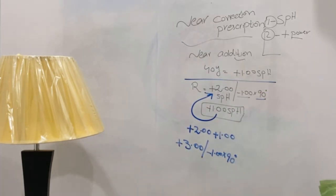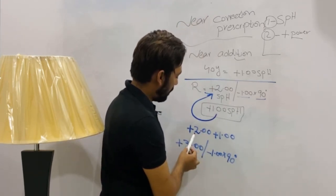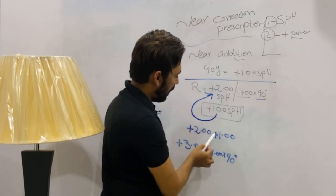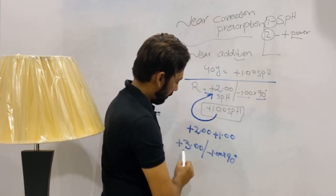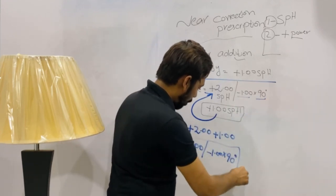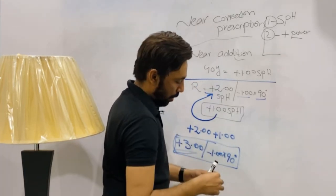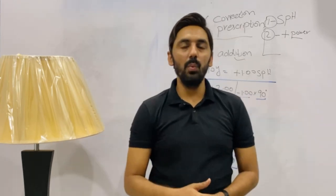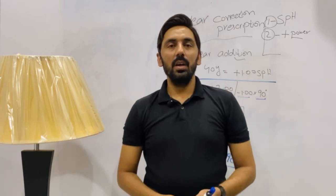So the new spherical in the near prescription is +3.00, because we had +2.00 spherical in the distance correction and we added the +1.00 addition to the spherical. The cylinder and axis of the cylinder remain as such — we do not change or alter the cylindrical correction or axis. We write them as-is: minus one cylinder at 90 degrees. So the near correction is: +3.00 / -1.00 × 90. That is exactly the difference between near addition and near prescription. If you have any queries regarding optometry, please leave a comment and I will answer it.